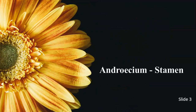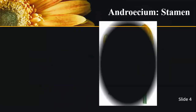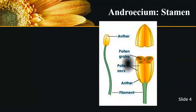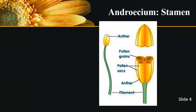The flower has male and female structures. The male structure is the androecium, which consists of individual stamens. The stamen consists of a long stalk-like structure called the filament, and the bulged part at the top is called the anther.